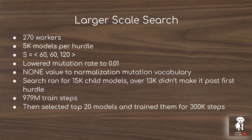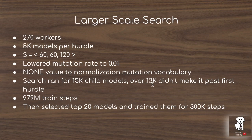After performing the ablation, they scale up the search to 5,000 models per hurdle, increase the step count, lower the mutation rate, and switch so that normalization is always required — removing the option of no normalization before transformations. The full search runs for 15,000 child models, with 13,000 removed in the first hurdle. Overall, the search performs 979 million training steps, and the top 20 models are selected and trained for an additional 300,000 steps.